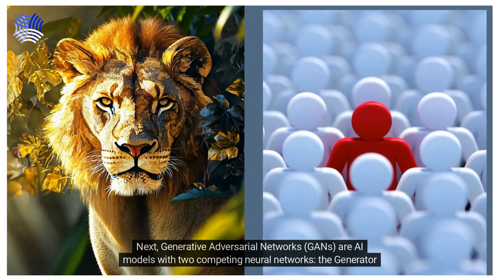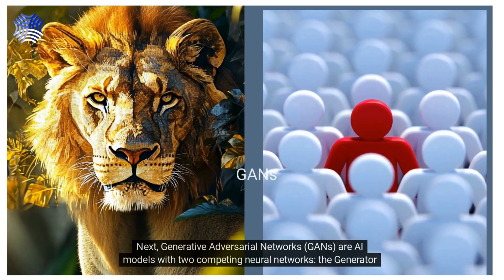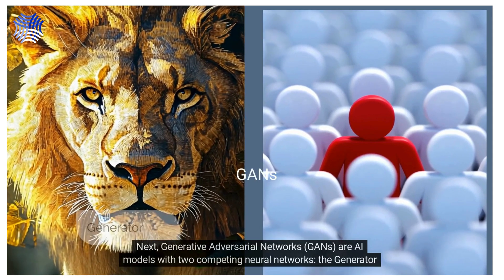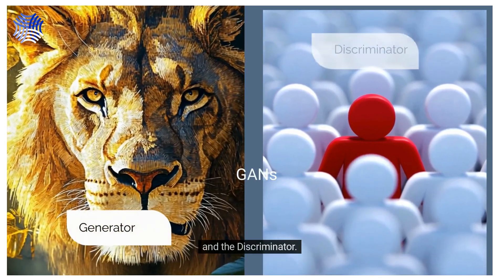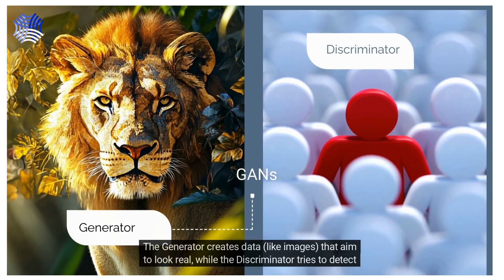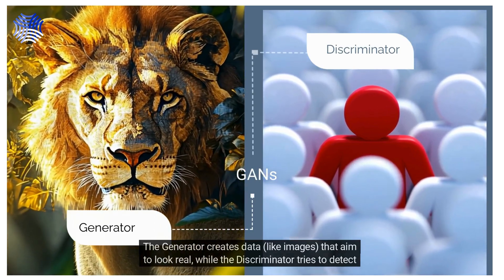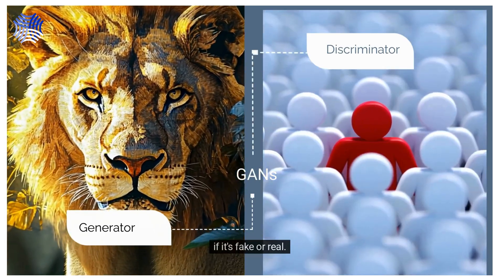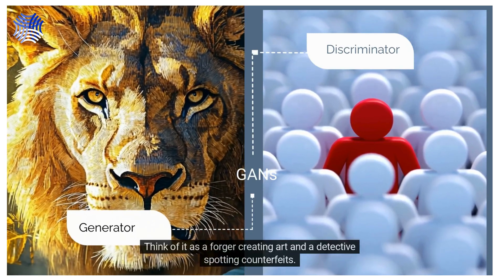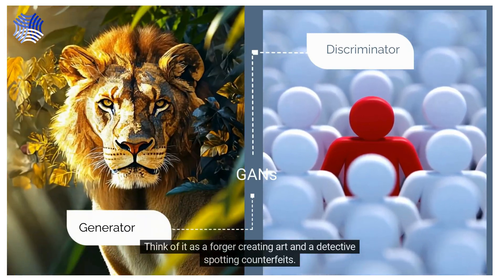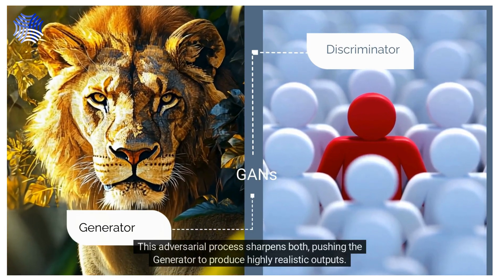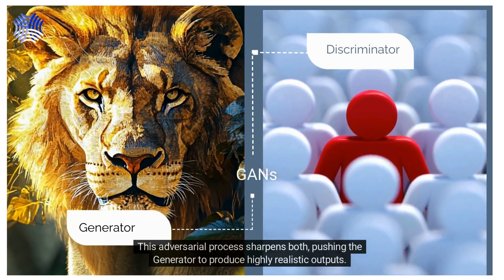Next, Generative Adversarial Networks, or GANs, are AI models with two competing neural networks: the generator and the discriminator. The generator creates data, like images, that aim to look real, while the discriminator tries to detect if it's fake or real. Think of it as a forger creating art and a detective spotting counterfeits. This adversarial process sharpens both, pushing the generator to produce highly realistic outputs.